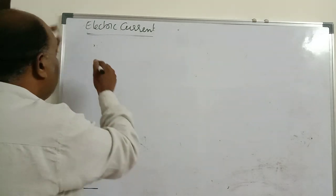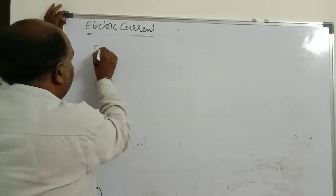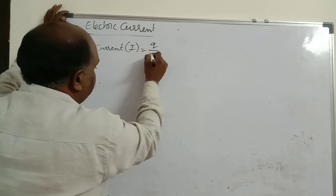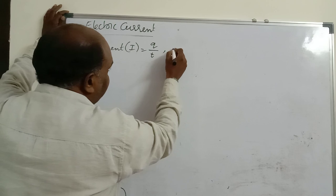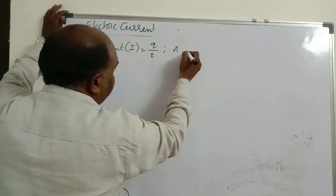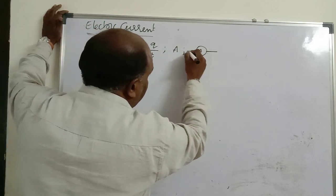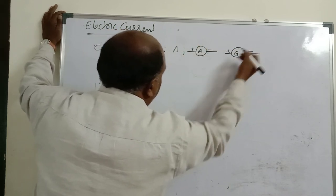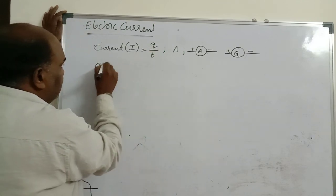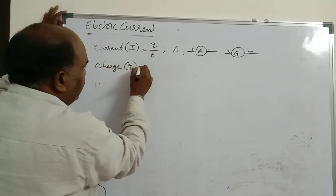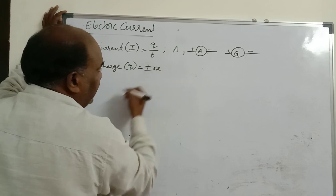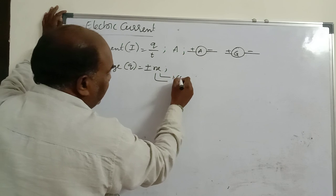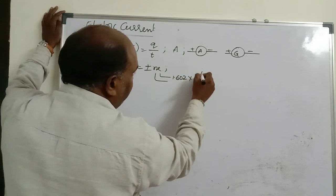Quick revision: current equals rate of flow of charge, Q divided by T. SI unit is ampere. Instruments to measure current: ammeter and galvanometer — connected in series. Charge Q = ±NE, where N is integer. Charge of one electron is 1.602 × 10⁻¹⁹ coulombs. Charge is quantized. Charges are two types: positive and negative. Without charge there is no current. Charge SI unit is coulomb.